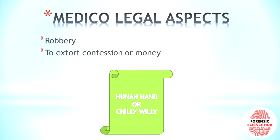There is a special condition called Hunan Hand, also known as Chili Willi. This is basically a painful contact dermatitis situation, which is seen in people who have continuous or prolonged exposure to chili powder, like people who work in factories. This chili pepper contains capsaicin and capsicin, as mentioned, and that leads to this condition called Hunan Hand — a contact dermatitis situation.